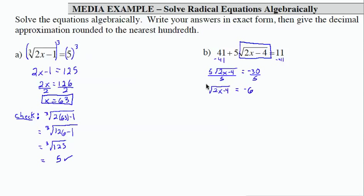Now I'm going to square, which is the opposite of square root. I get 2x minus 4 equals 36. Add 4 to both sides. I get 2x equals 40. Then I'm going to divide both sides by 2, giving me x equals 20.